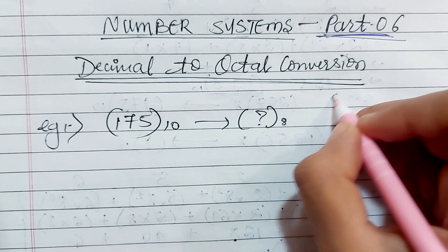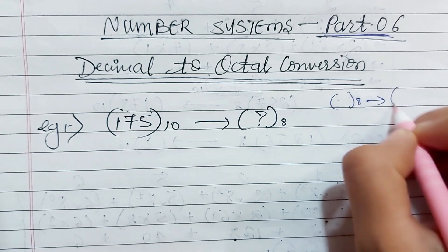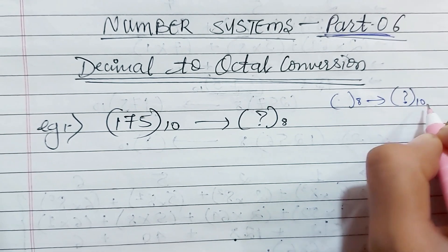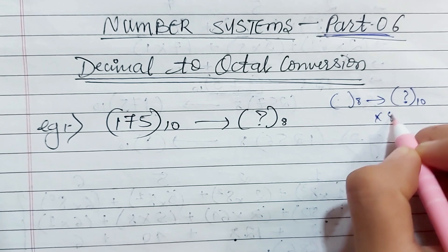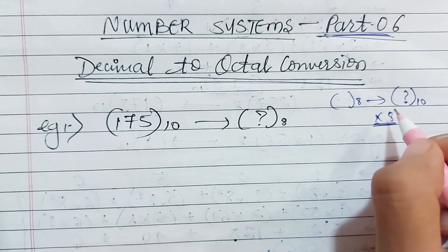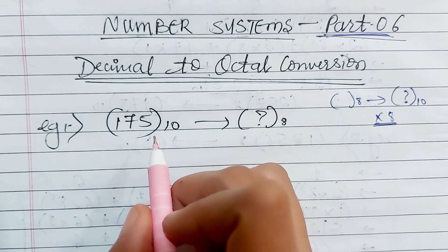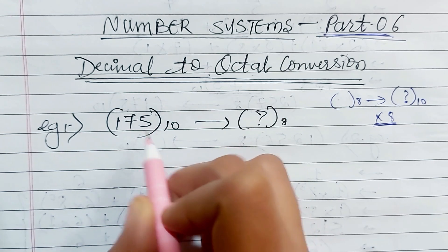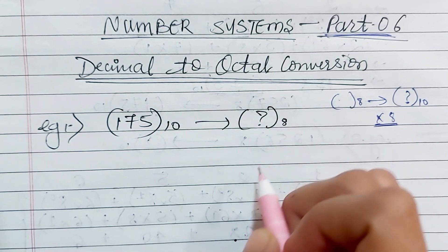In part 5, we converted the octal number to its equivalent decimal value. The method used was multiplication by 8. And now we are going to do decimal to octal conversion, where we will convert a decimal number to its octal equivalent.